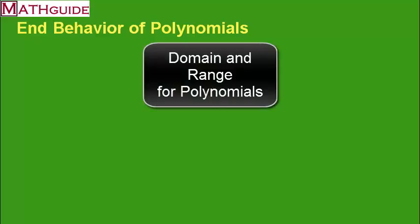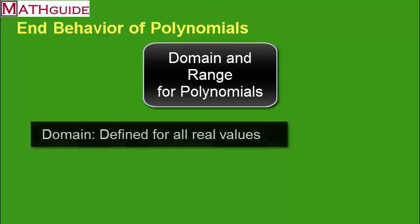When we talk about polynomials, it's convenient if we first jump into domain and range. All polynomials are defined in their domain the same way — they encompass all x values. So the domain for all polynomials would be all real values.